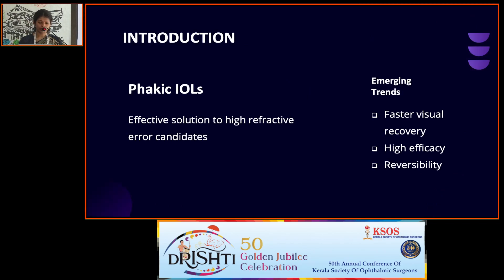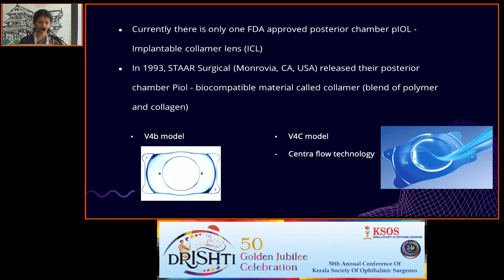Phacic IOLs provide an effective solution for high refractive error candidates who are not suited for corneal refractive treatments. They are in great demand due to advantages like faster visual recovery, high efficacy, and reversibility. Currently, the only FDA-approved posterior chamber phacic IOL is the implantable collamer lens (ICL), released by STAAR Surgical, made of a biocompatible collagen-polymer blend called collamer, with a plate haptic design and anterior lens vaulting to prevent crystalline lens contact.